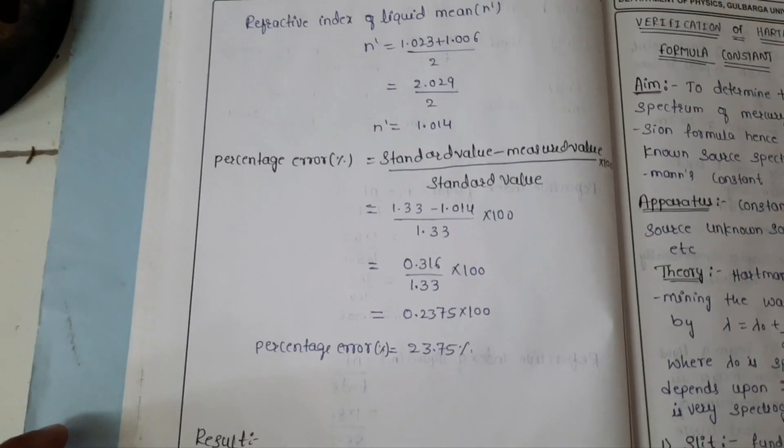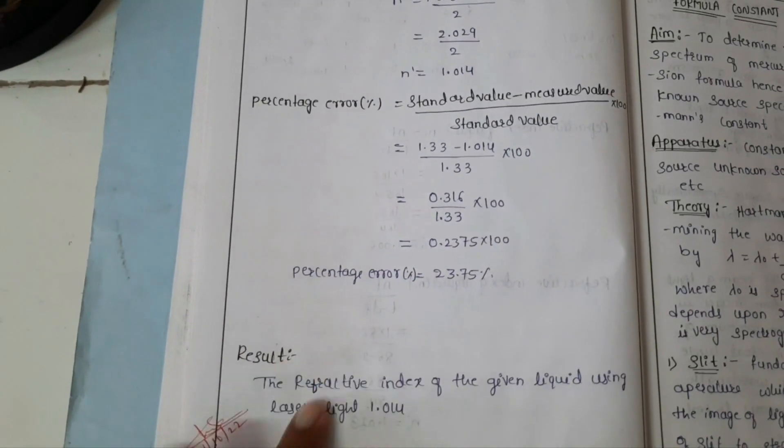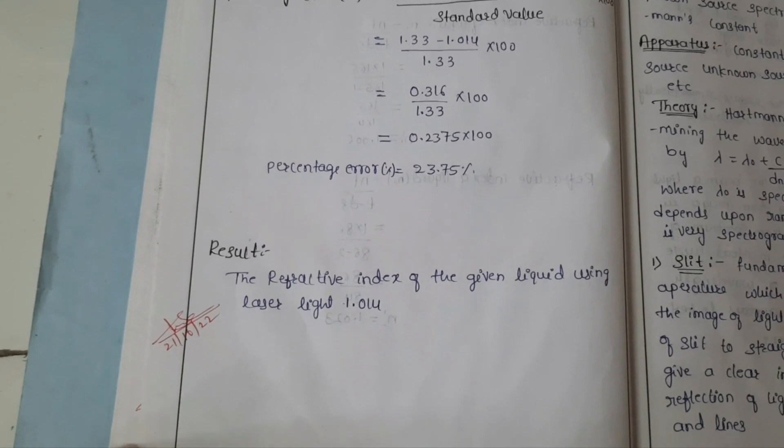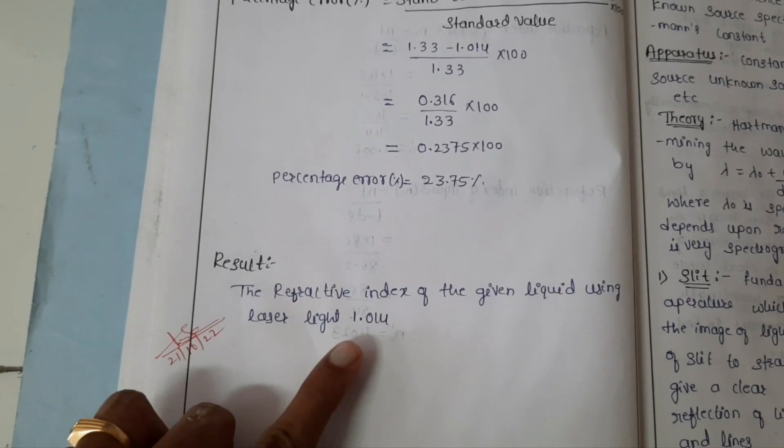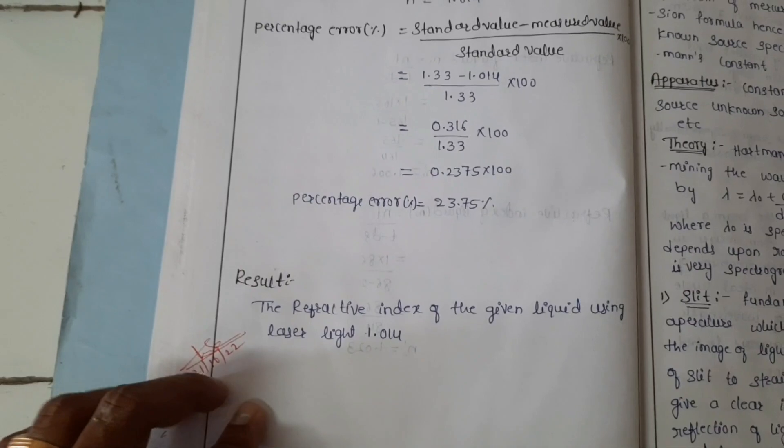So the percentage error you can calculate using this formula. So how much is the error. So the refractive index of given liquid using laser light is about 1.014.